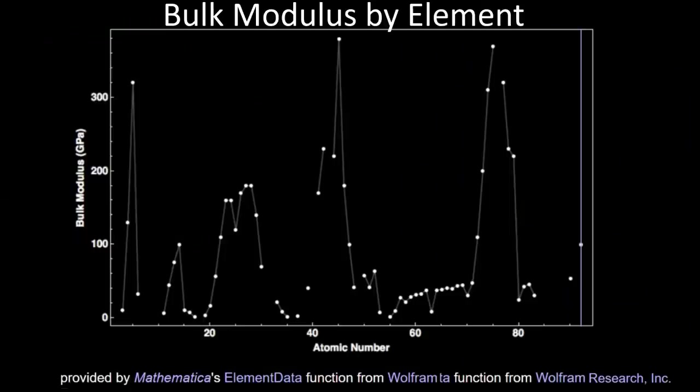Bulk modulus, the ability of a material to resist being compressed, as opposed to strained or sheared, is generally thought to be all about the electrons around that atom, and results in a graph that oscillates up and down and back up again as you move through the periodic table.